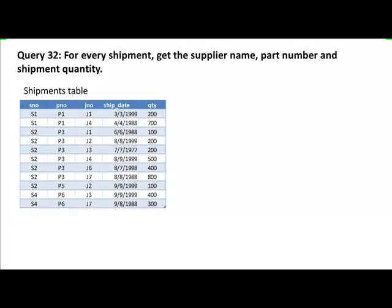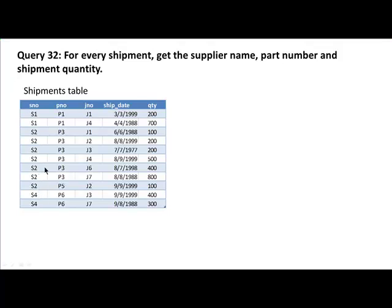That's the complete shipments table. If we had asked only for supplier number, part number, and shipment quantity, we could have taken it out directly. But we are not asking for the supplier number — we are asking for the corresponding name. So we need to go to the suppliers table, find the name of supplier s1, find the name of supplier s2, find the name of supplier s4, and put those names in place of the supplier numbers.